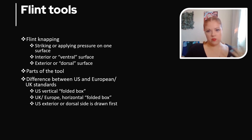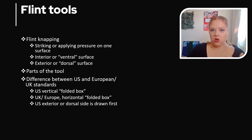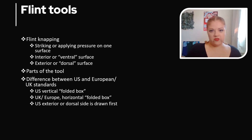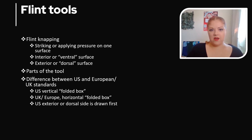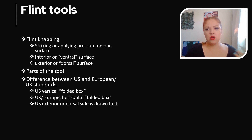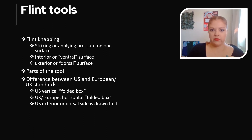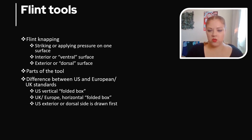These tools are made when striking or applying pressure to one surface, called the striking platform, on a piece of material, the core. Once this has been done the first time, the flake now has an interior or ventral surface formed by its removal from the core, as well as an exterior or dorsal surface, which was originally part of the core. The platform part of the flake is referred to as the proximal end, the other the distal end. The ventral surface is where you can usually make out the bulb of percussion. Once the initial piece is struck off, you will have what are called flakes, and on the cortex you will have what are called flake scars.